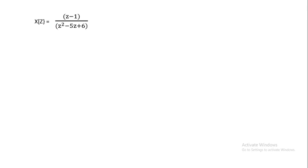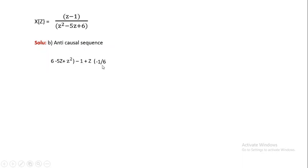For the anti-causal sequence, we start with the lower polynomial value as the first term. So z² - 5z + 6 is rewritten as 6 - 5z + z², and the numerator z - 1 is rewritten as -1 + z. To get -1, 6 must be multiplied by -1/6, giving -1; -5z × (-1/6) gives 5z/6; and z² × (-1/6) gives -z²/6.